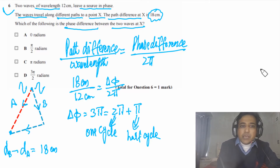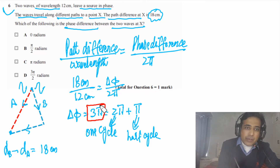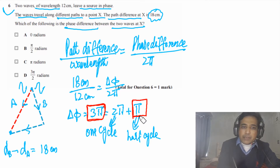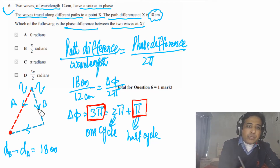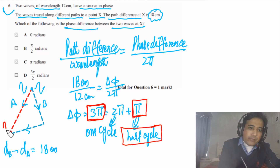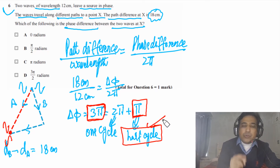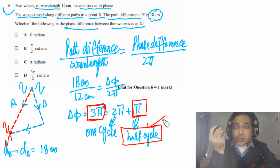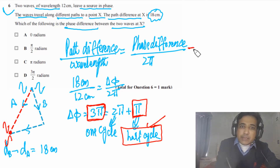In the exam, they may give you the value 3π and ask for the phase difference, or they may ask for the effective phase difference as a fraction of a cycle — which is half a cycle, or π. So the phase difference at point X between the two waves is half a cycle (π). Visually, one wave and the other will be exactly inverted — half a cycle apart.